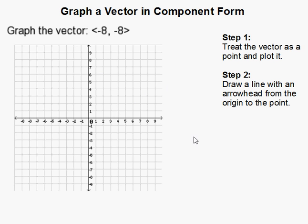I've got to graph a vector in component form. Alright, so we're given this vector negative 8 comma negative 8.